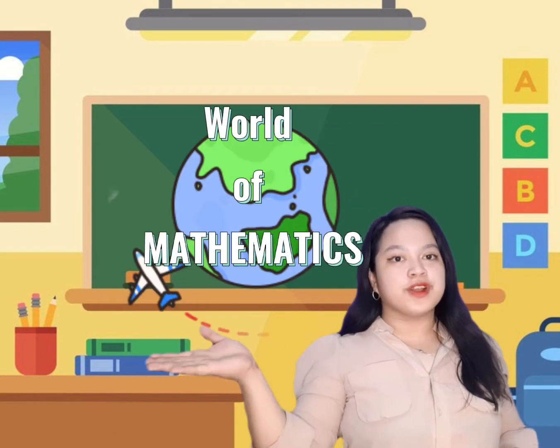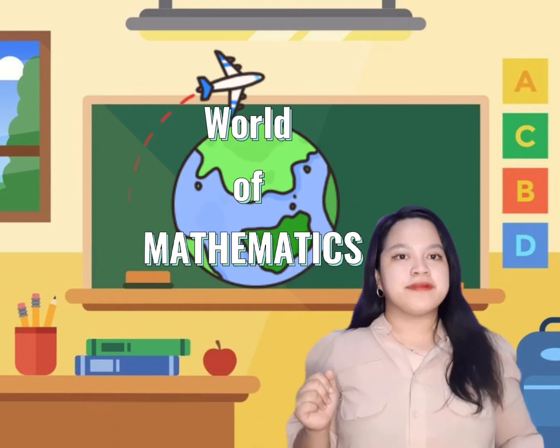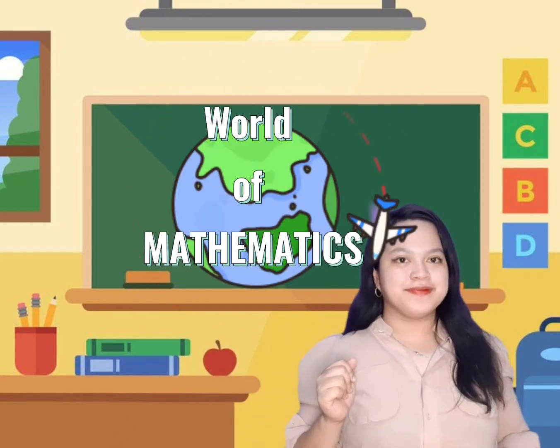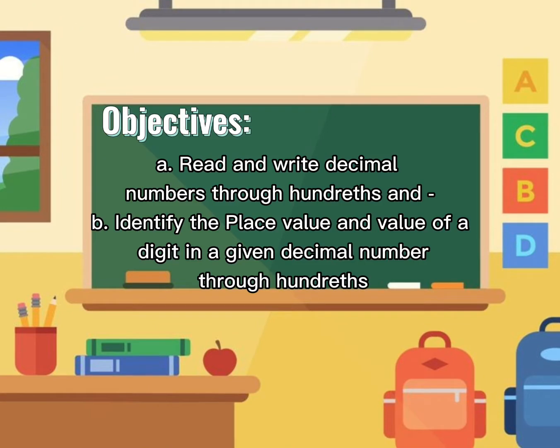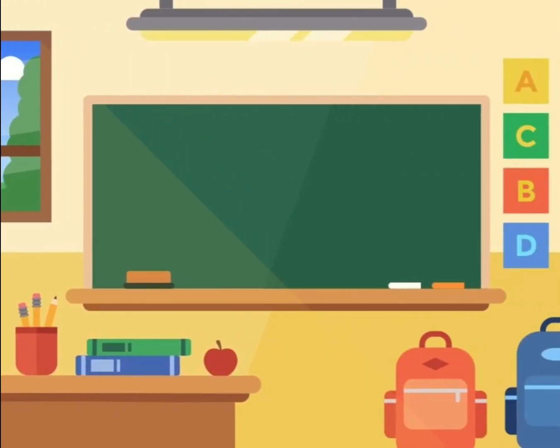We are going to read and write decimal numbers through hundredths, and identify the place value and value of a digit in a given decimal number through hundredths. Before we begin with our lesson, let us first have an activity.